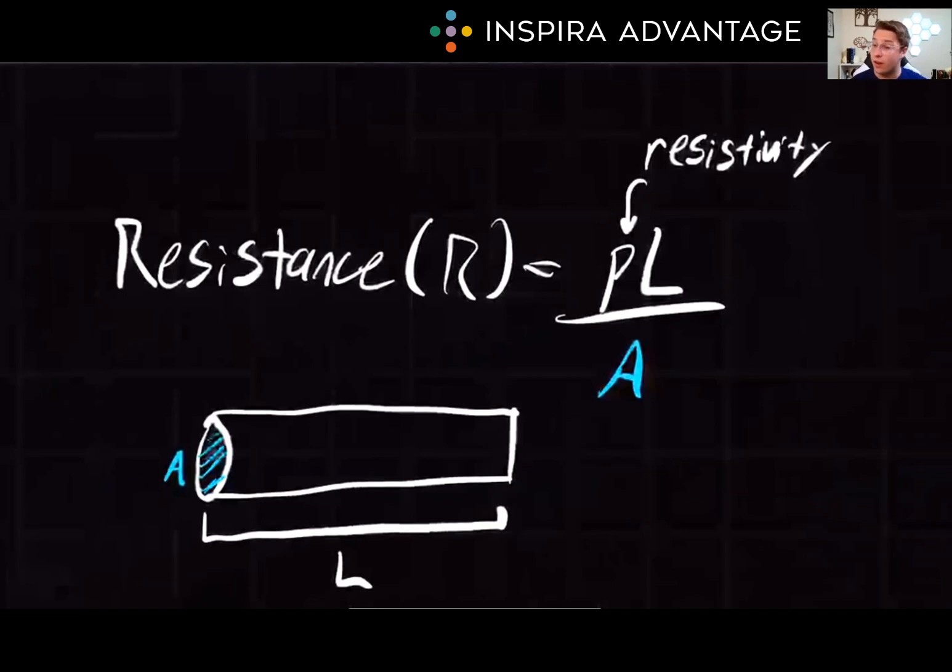The resistance of a resistor is determined by its resistivity, length, and cross-sectional area A. As given by the formula here, resistance equals the resistivity, it's supposed to be a rho here, but I do it as a P, times the length and the cross-sectional area represented by the schematic of a wire down here.